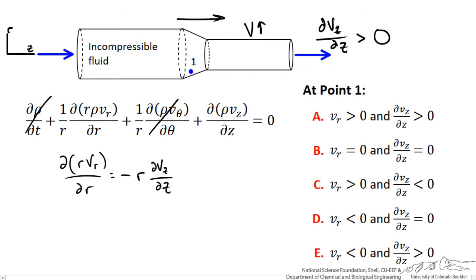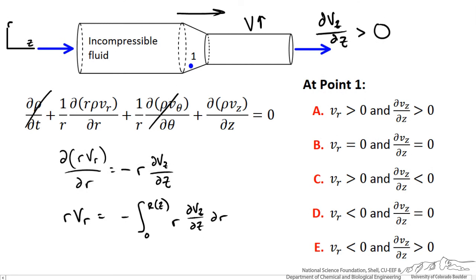We can take this a step further and evaluate this as such. We have integrated from zero at the center of the tube to the outer radius, which is a function of z. That outer radius is changing in the contraction area, and we have moved all the terms to the right side.